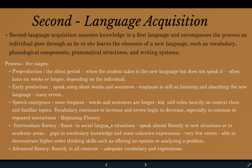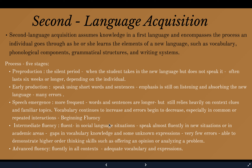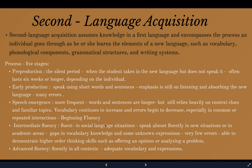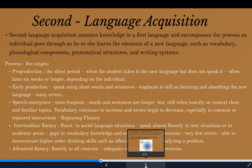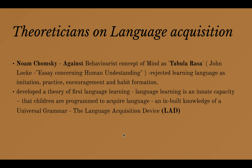Advanced Fluency means fluency in all contexts. The learner has adequate vocabulary and expressions — all the language and expressions used naturally in that foreign language, used with full capacity. These are the five stages in second language acquisition. Now we can move on to the next topic: theoreticians on language acquisition.